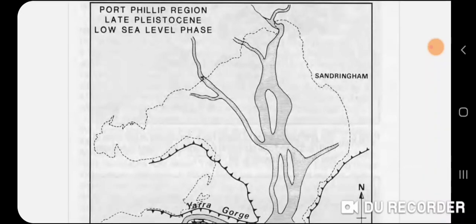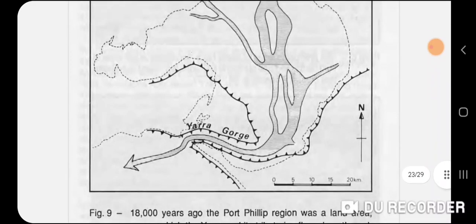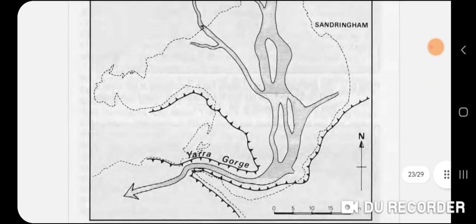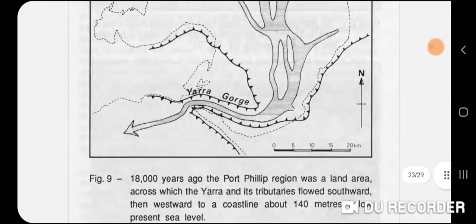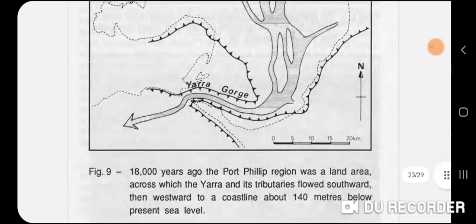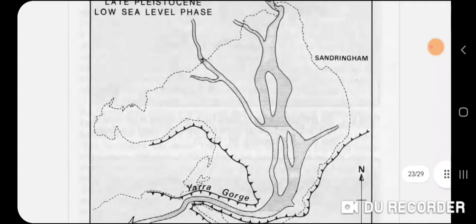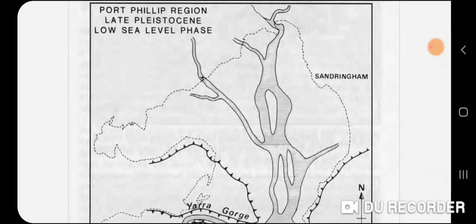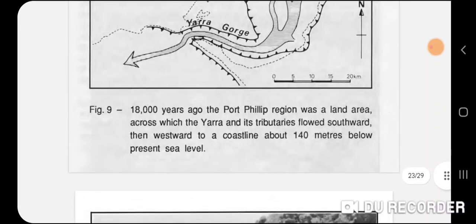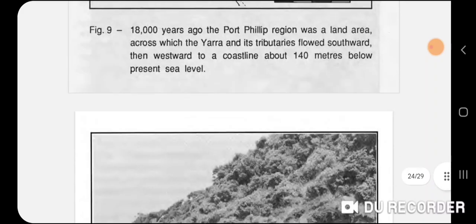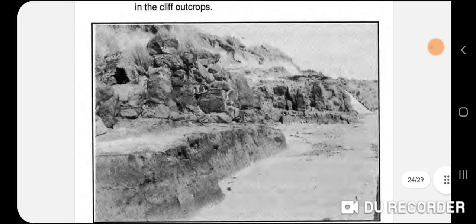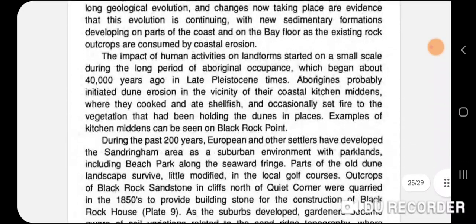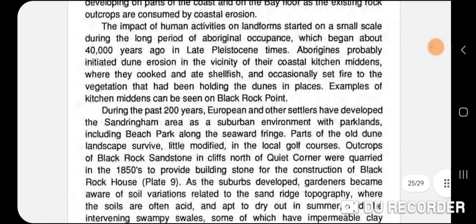Here we have the old watercourse of Port Phillip, and as you can see it goes out to the Rip area and out to Bass Strait — that's the former river. That would have been 140 meters below present sea level, so either it was higher in elevation and sunk, or there was a period of glaciation — the 18,000-year ice age. Then we have some more information, there's a former quarry, and the human era which has changed the area quite a lot.